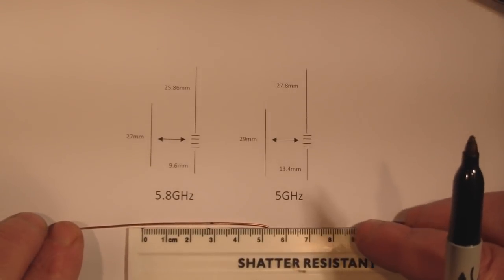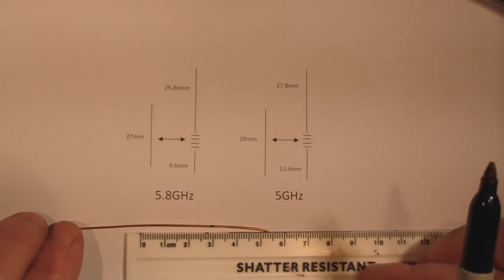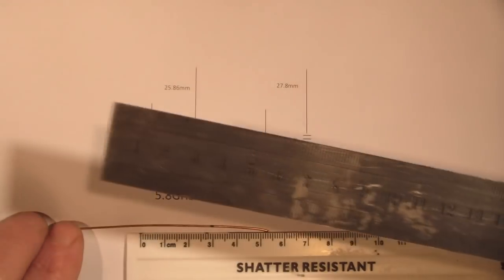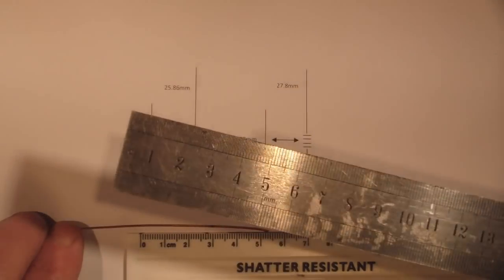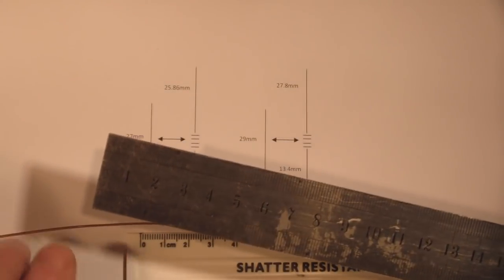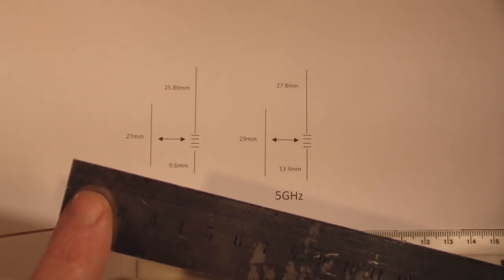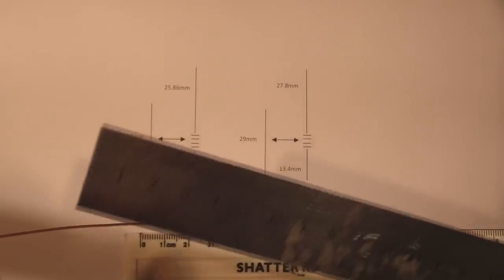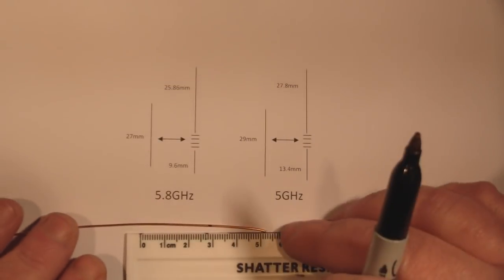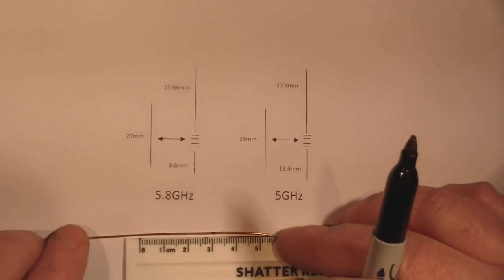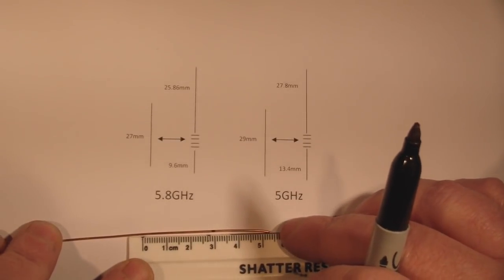I'm using this slightly cheaper white ruler here because it shows up better on camera, but you really want to try and get yourself something like this steel one here where you've got quite a lot of different marks for quarter millimeters, etc. So we'll measure off at 29 millimeters for the coil length.